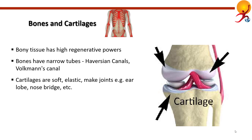Cartilages are softer elastic tissues that make joints between bones. They are found in the ribcage, ear, nose, bronchial tubes, intervertebral discs, and other structures.